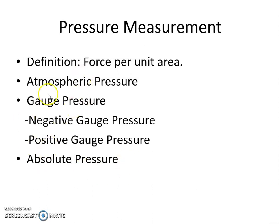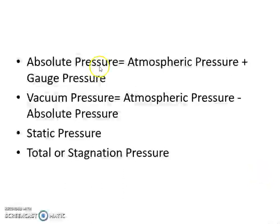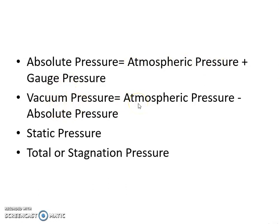These are some of the terms used generally in the measurement of pressure. Now let us see the mathematical representation: absolute pressure is equal to atmospheric pressure plus gauge pressure, and vacuum pressure is equal to atmospheric pressure minus absolute pressure.